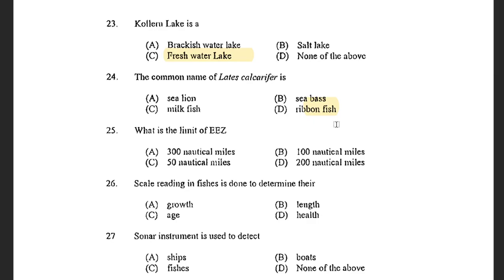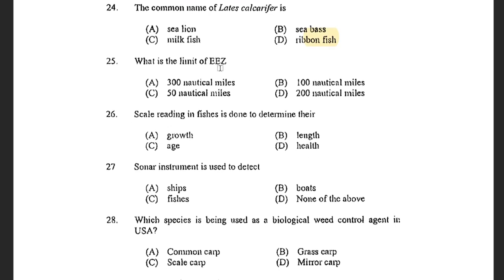Next question: What is the limit of EEZ? Options are 300 nautical miles, 100 nautical miles, 50 nautical miles, and 200 nautical miles. The answer is 200 nautical miles. EEZ is the Exclusive Economic Zone and it ranges 200 nautical miles from the coast. Also, territorial water is known as State water and it is 12 nautical miles from the coast.